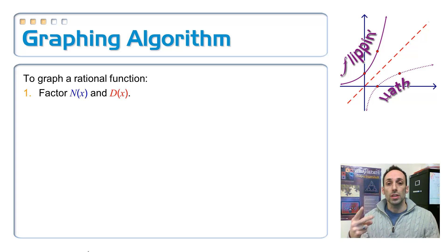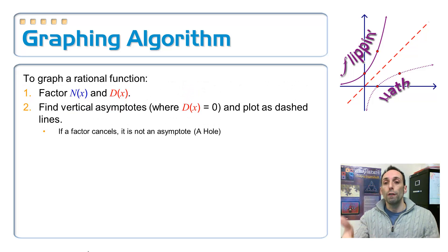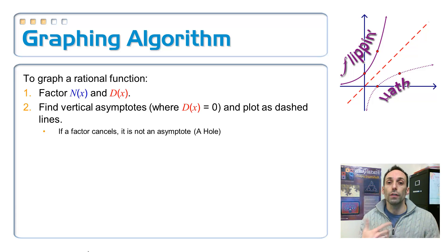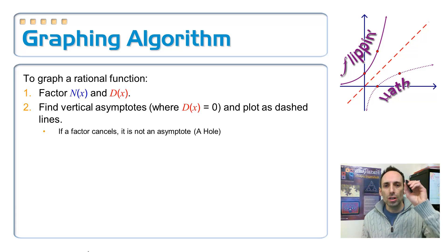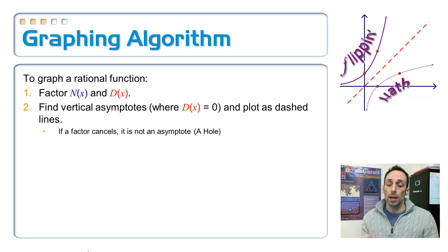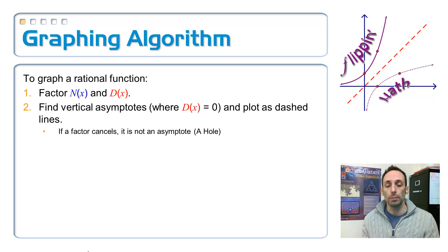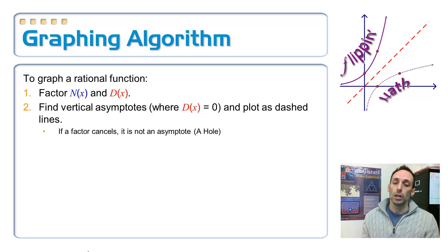Step number two: find your vertical asymptotes. Where do you get the vertical asymptotes? You get the vertical asymptotes where the denominator is equal to zero. Go ahead and put that on your graph as a dashed line. Sometimes though you have a factor in the top that cancels with a factor in the bottom — in that case you may not have a vertical asymptote; you would probably have a hole instead.